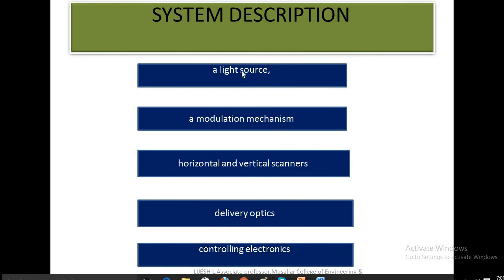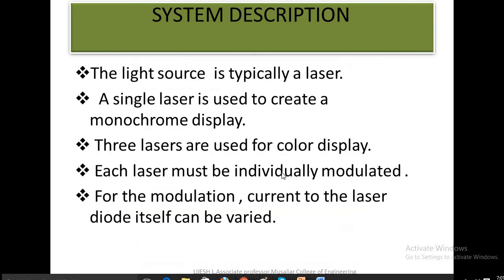In the system description, there's a light source, modulation scheme, horizontal and vertical scanning for beam scanning, delivery optics for optical projection, and controlling electronics. The light source is typically a laser. A single laser is used to create a monochrome display for black and white, and if we need to project color images, three lasers are normally used.